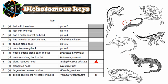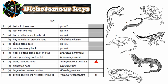Now let's go to animal B. It has small feet but they seem like they have three toes, not four. Feet with three toes — yes, go to two. Question two: has a collar or crest on head? No, it does not have something on its head like a crest. So no collar or crest on head, and the name of this animal is identified. Animal B is placed here.